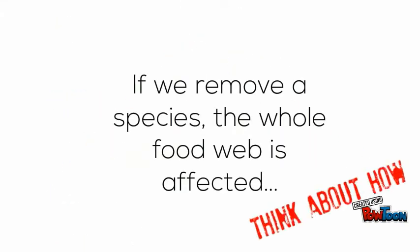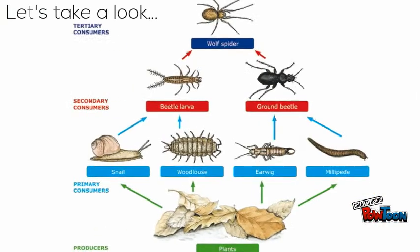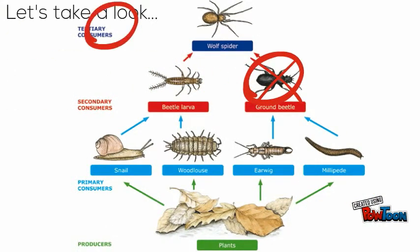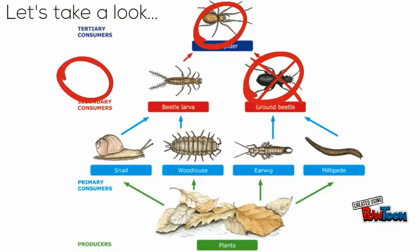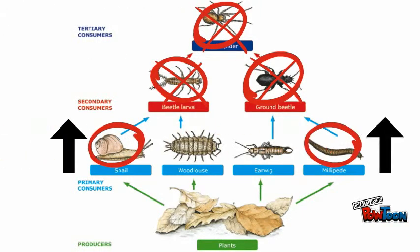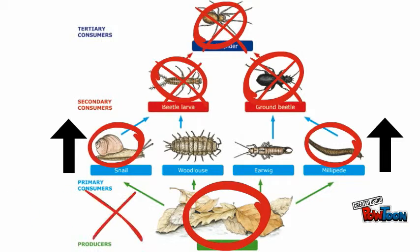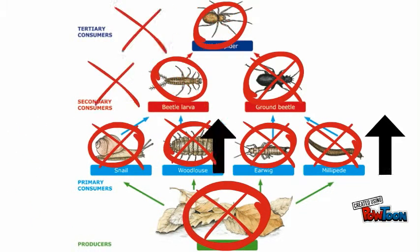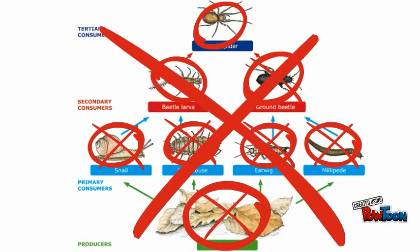If one species is lost from a food web, all the others are affected. If we remove this ground beetle, it leaves only the wolf spider with the beetle larvae to eat, who eventually die out as the wolf spider eats too much of them. The wolf spider now has no food left so it dies out too. This increases the populations of snails and millipedes as they have no predators. They ate all the leaves, in turn starving the woodlouse, earwig and themselves to death.